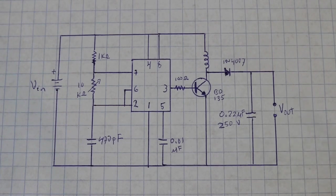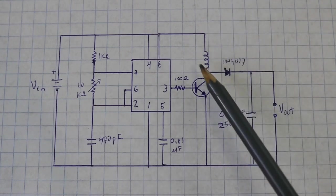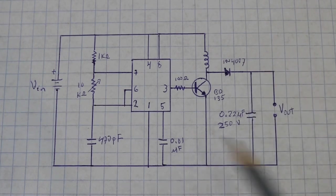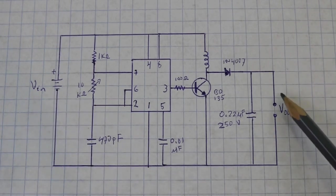The magnetic field collapses and induces a higher voltage on the inductor. Since the current cannot flow through the transistor, it goes through this diode and charges this capacitor at the output at a voltage higher than the input voltage. And this is the voltage that we obtain here at the output.